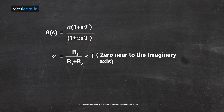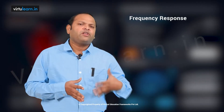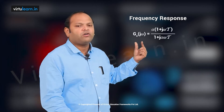The time constant τ equals R1·C — the product of the parallel resistor and capacitor. The alpha value is α = R2/(R1+R2), which is obviously less than 1. Since α < 1, the zero is nearer to the imaginary axis, confirming it is a lead compensator. Given τ and α, we can design the values of R1, R2, and C.